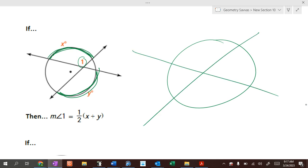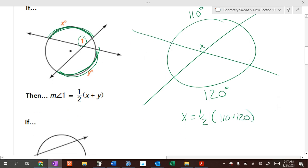So let me do that. This is a 120 degree arc, this is a 110 degree arc. How big is angle x? Well, angle x equals one half of 110 plus 120. 110 plus 120 is 230, half of that is 115. So this angle is 115. Easy peasy lemon squeezy, right? Add them up and divide by two.